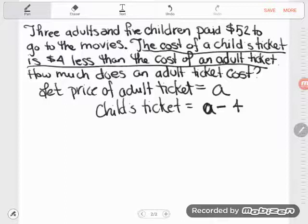Now once again, these are just expressions. These are both expressions, A and A minus 4. In order to solve a mystery like what is A, I have got to set up an equation. Two expressions that are equal to each other. So I need one more bit of information in order to do that. And that's where I'm going to use this. Three adults and five children paid $52.